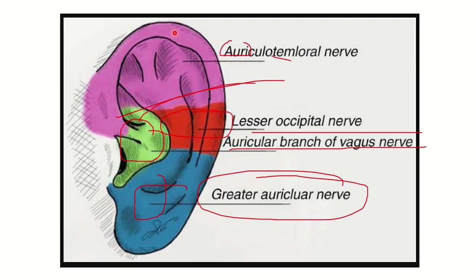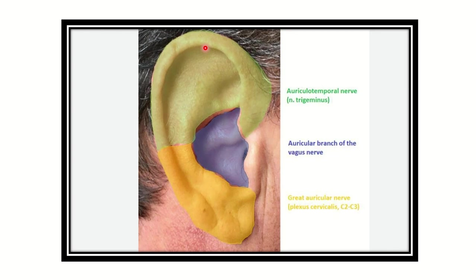The upper part is the cartilaginous part, and the main cartilaginous portion is present here. Any collection or infection may cause fluid collection between the skin and the cartilage, causing severe pain. The upper part of the ear is supplied by the auriculotemporal nerve, the middle area by the auricular branch of the vagus nerve, and the lower part by the greater auricular nerve.